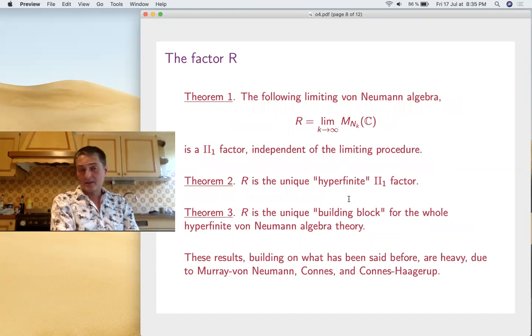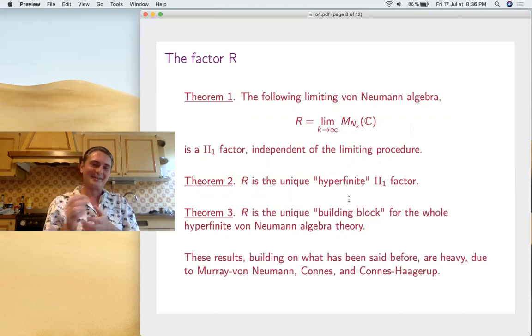So finally, one more thing. Among all these type II₁ factors, there is somehow a smallest one, which is unique. It's called the hyperfinite factor R of Murray-von Neumann. So the idea is that no matter how you take inductive limits of matrix algebras, no matter how the limit is made, you always obtain, when closing weakly, the same type II₁ factor, which is called R. And this is somehow the unique hyperfinite type II₁ factor.